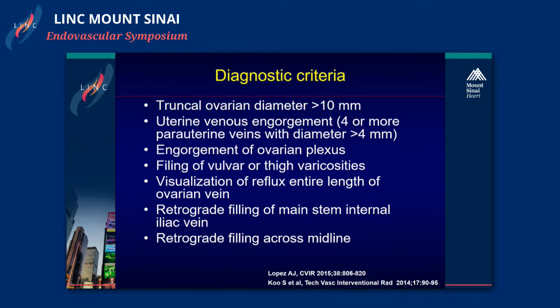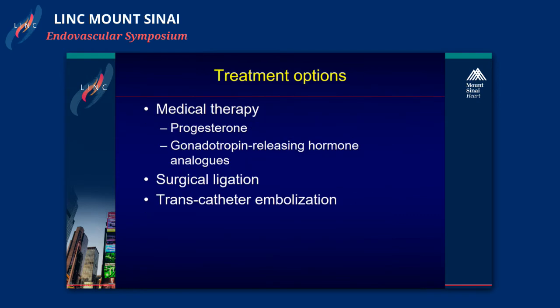The diagnostic criteria include: truncal ovarian diameter of more than 10 millimeters, uterine venous engorgement or the ovarian plexus, filling of vulva or thigh varicosities, visualization of reflux over the entire length of the ovarian vein, retrograde filling of the main stem internal iliac vein, and retrograde filling across the midline.